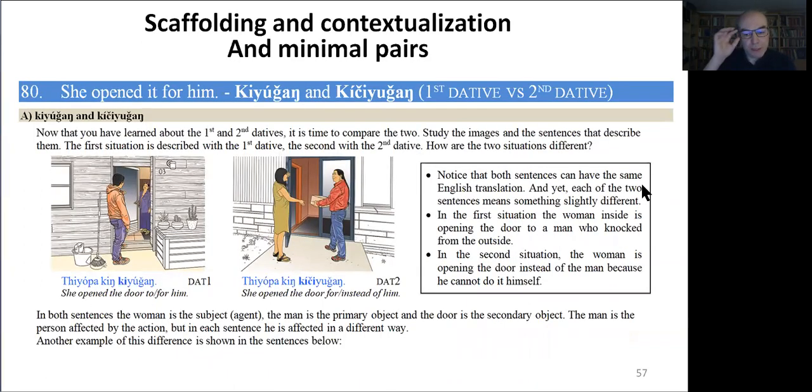They're coded through the dative verb obviously, but their semantic interpretation is context driven, which is also explained here in the information box. Another example is a minimal pair introducing the difference between the first dative and the second dative. Now that you have learned about the first dative and the second dative, it is time to compare them. Study the images and the sentences that describe them. The first situation is described with the first dative and the second one with the second dative. How are they different?